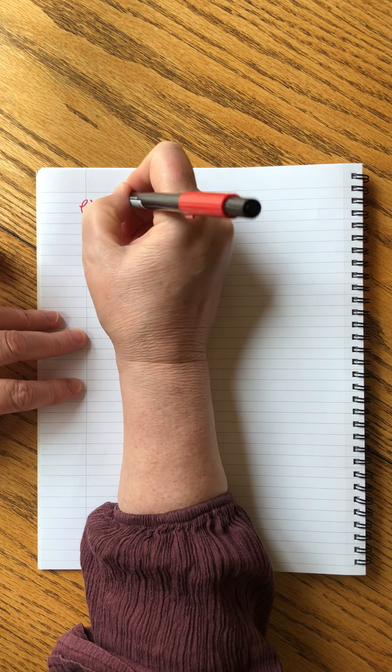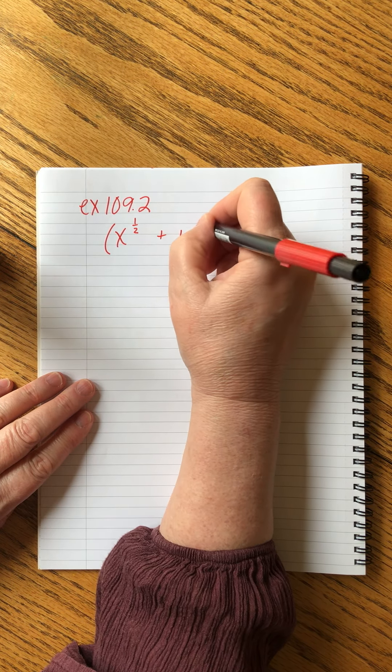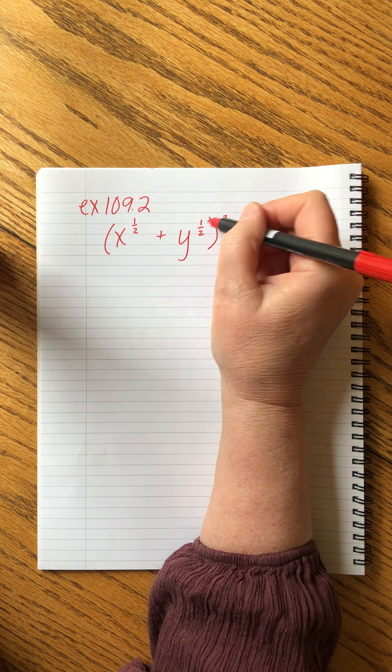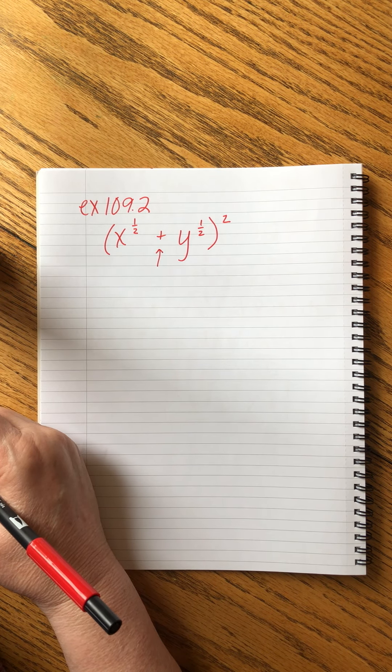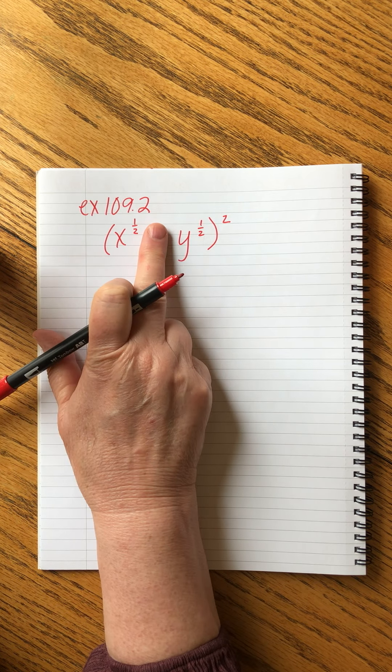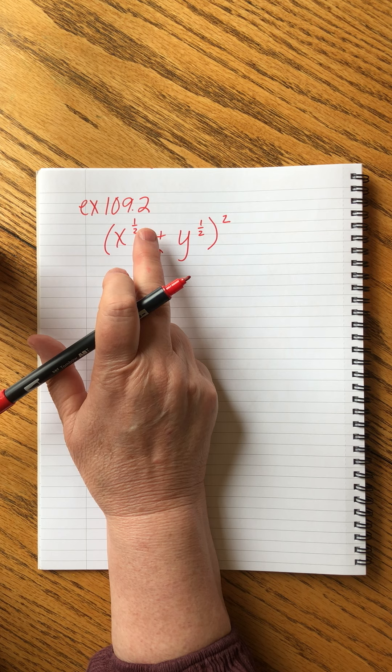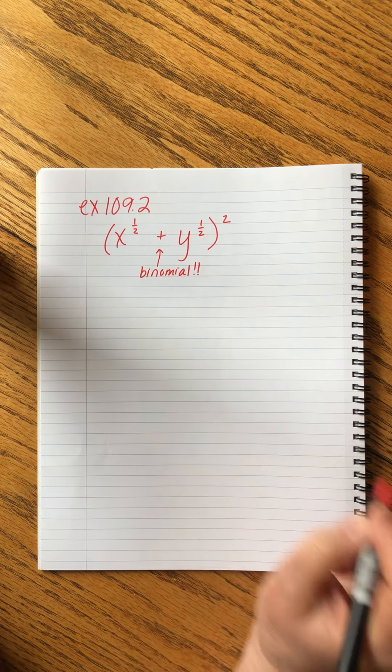What John's going to do now is he's going to throw us a curveball. Example 109.2: X to the one half plus Y to the one half squared. Now, at first glance, we look at this and go, okay, power rule, we're going to multiply this times this and this times this. But here's the trouble. There's a plus sign in between these terms. That means they're two different terms. That means this is a binomial. That means when we square it, we can't just do the individual terms as we do when they're just being multiplied.